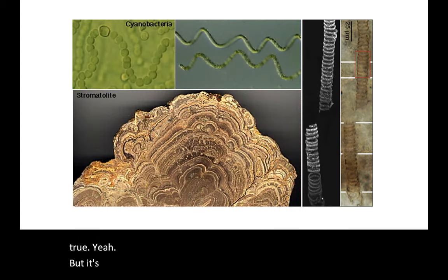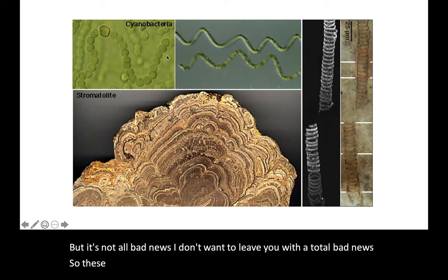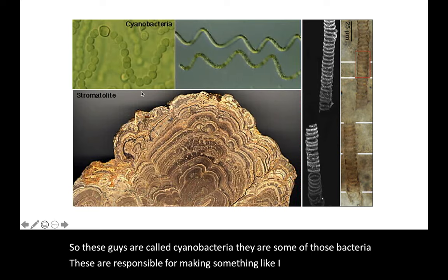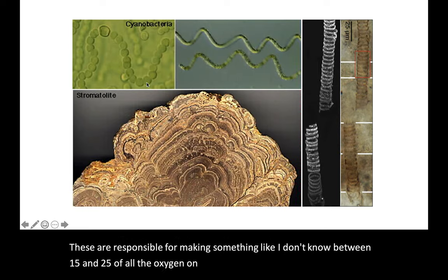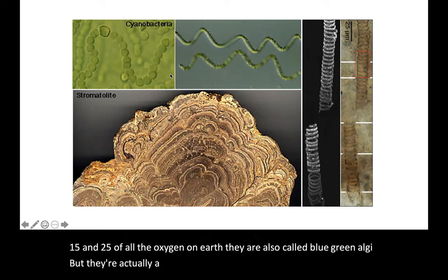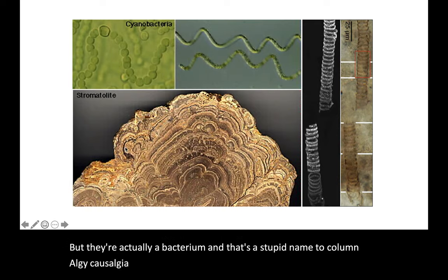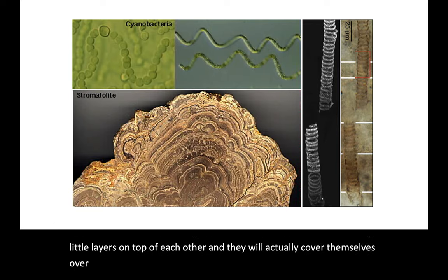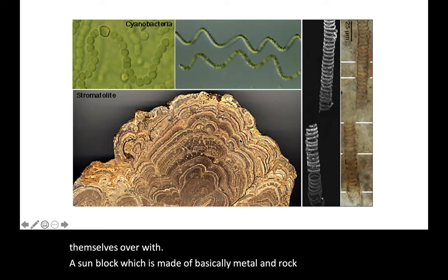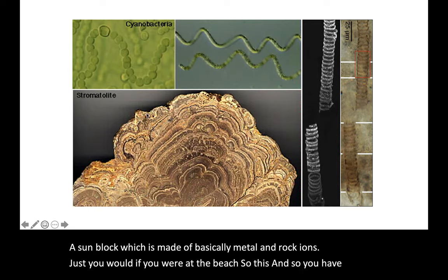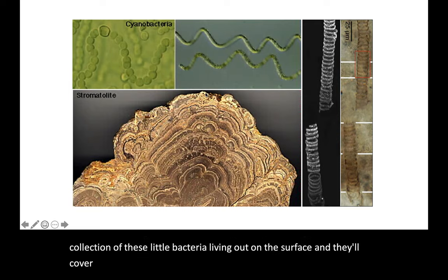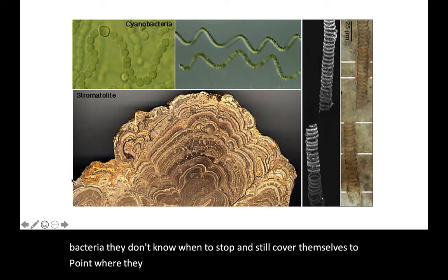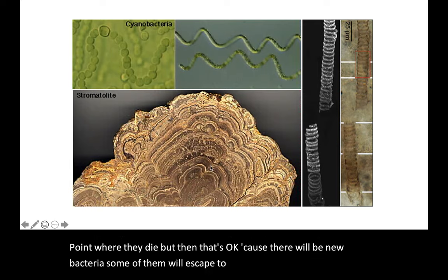It's not all bad news. These guys are called cyanobacteria, and they are responsible for making something like 15 to 25% of all the oxygen on Earth. They're also called blue-green algae, but they're actually a bacterium — calling them algae is a stupid name because algae are eukaryotes. What these things do is build up little layers on top of each other. They cover themselves over with a sunblock made of basically metal and rock ions, just like you would if you were at the beach.